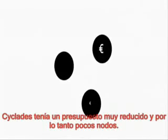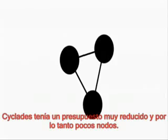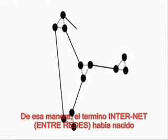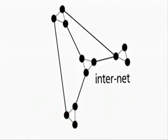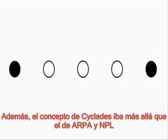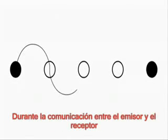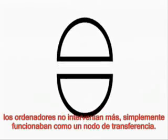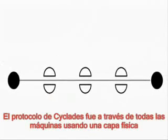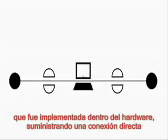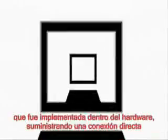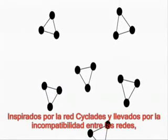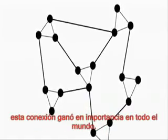Since Cyclades had a far smaller budget than ARPANET and thus fewer nodes, the focus was laid on communication with other networks. In this way, the term 'internet' was born. Moreover, Cyclades' concept went further than ARPANET's and the NPL's — during communication between sender and receiver, the computers were not to intervene anymore but simply serve as transfer nodes. Cyclades' protocol went through all machines using a physical layer implemented in the hardware, providing a direct connection with the receiver in an end-to-end structure. Inspired by the Cyclades network and driven by incompatibility between networks, their connection gained importance everywhere.